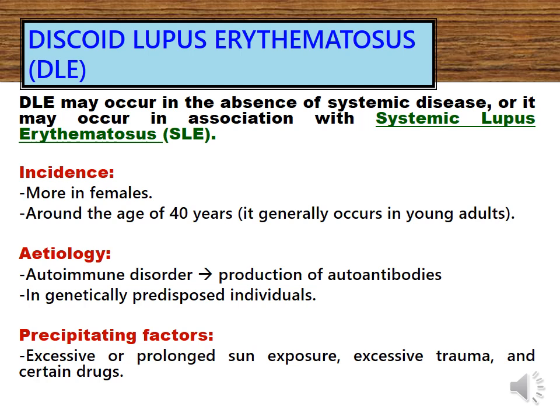Prolonged sun exposure, excessive trauma, and certain drugs may act as precipitating factors for discoid lupus erythematosus.